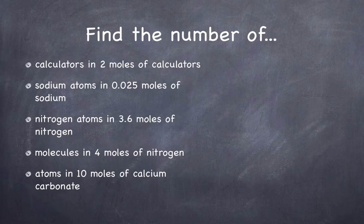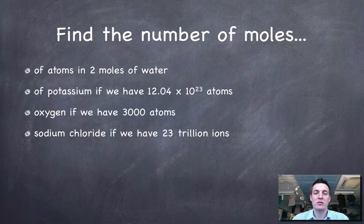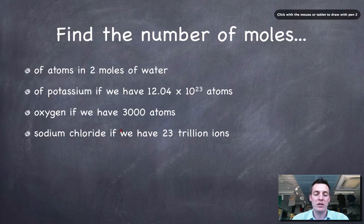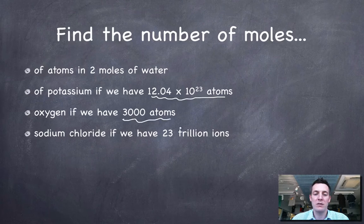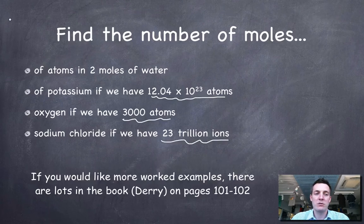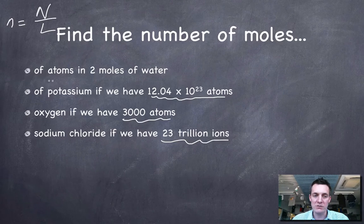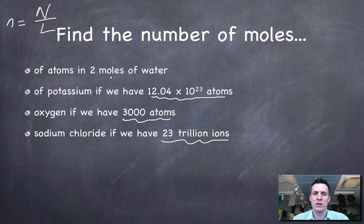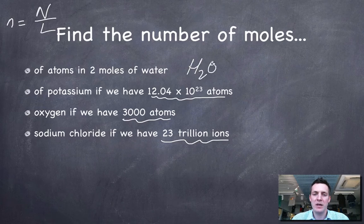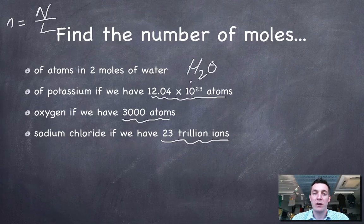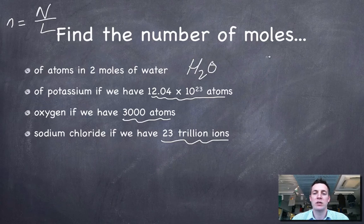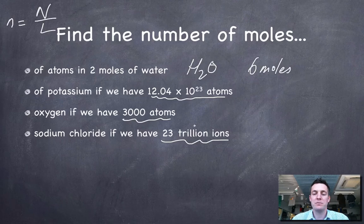Now we're kind of flipping the problem around a little bit and now I'm being asked to find the number of moles. Here we're being told the number of particles that we have. So this time I'm going to use the formula, the number of moles is equal to the number of particles divided by Avogadro's number. In this first question, I'm already told how many moles of water there are. So this question is saying, find the number of moles of, I'm already told the number of moles. But remember that water has the formula H2O. So there are 3 atoms in every molecule of water. If I had 1 mole of water molecules, I'd have 3 moles of atoms. But I've got 2 moles of water. So therefore I've got 6 moles of atoms.